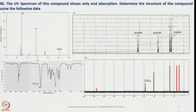So now Problem 40 is here. The UV spectrum of this compound shows only end absorption. We have to determine the structure of the compound using the following data: the mass parent molecular ion peak is given, along with 1H NMR, IR spectrum, and 13C NMR.